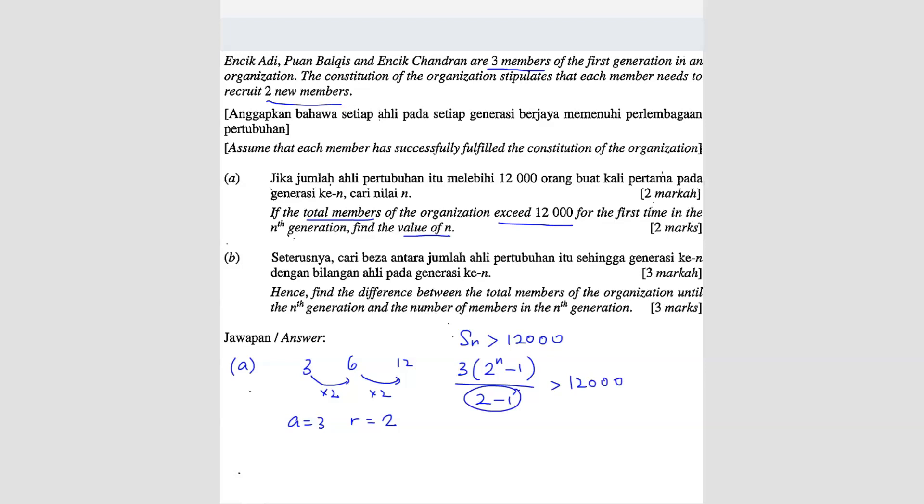So here you get one. So it's not going to make any difference. So two power n minus one. I'm going to bring the three to the other side. So 12,000 divided by three, I get 4,000. Then two power n equals to 4,001.